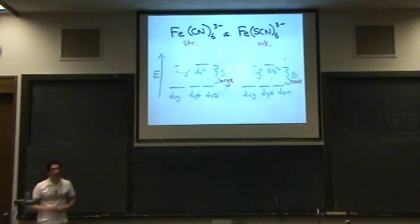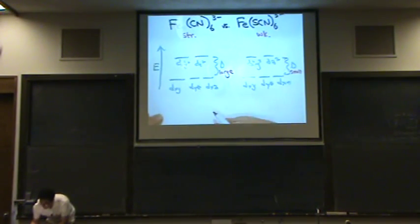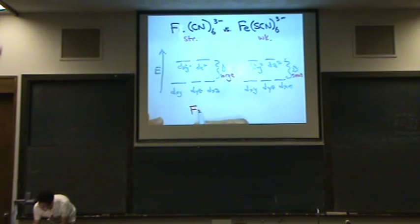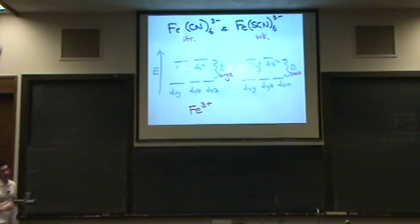Now let's fill in our electrons knowing that information. First of all, though, we need to know iron, I told you as I named it, is 3+ in this situation. Why is that? Because the ligands are all minus 1. So it's a 3+ for iron.